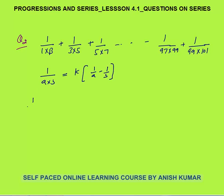Can I write 1/(1×3) as 1 − 1/3 as I did in the previous question? No, because 1 − 1/3 = 2/3, which is not equal to 1/(1×3). So don't try to memorize a fixed approach — every question will have a different methodology.